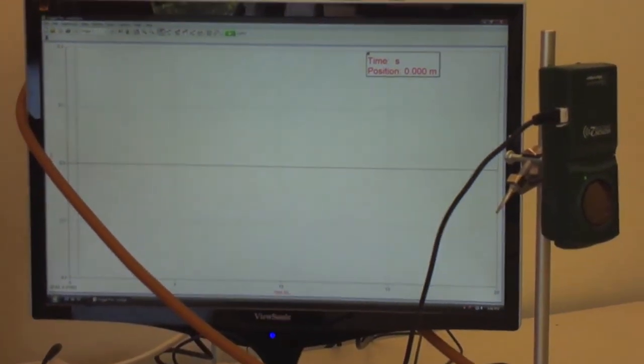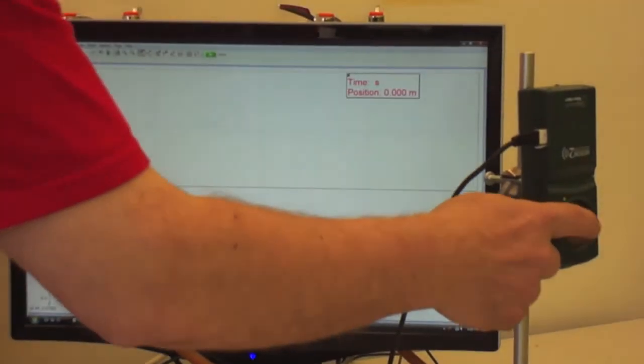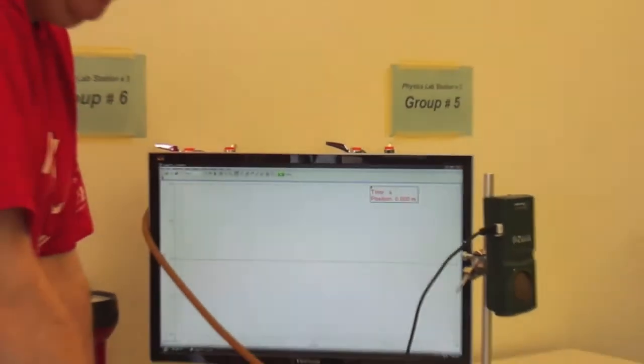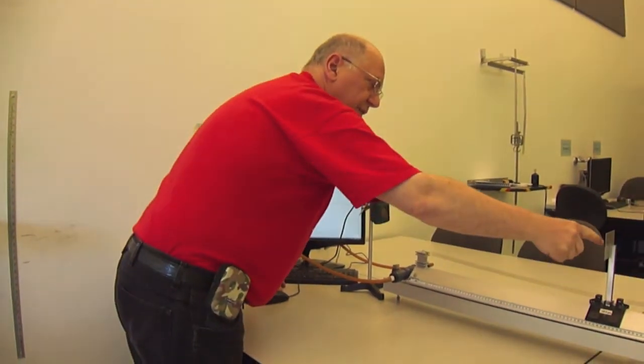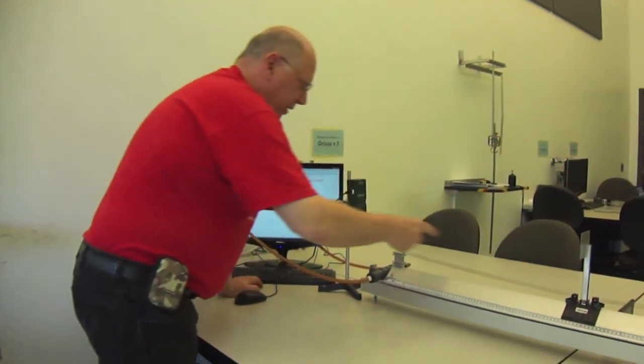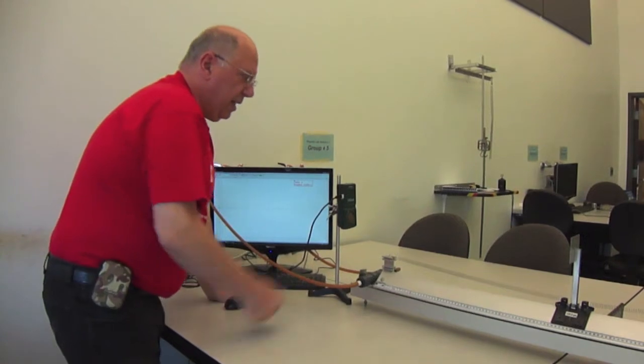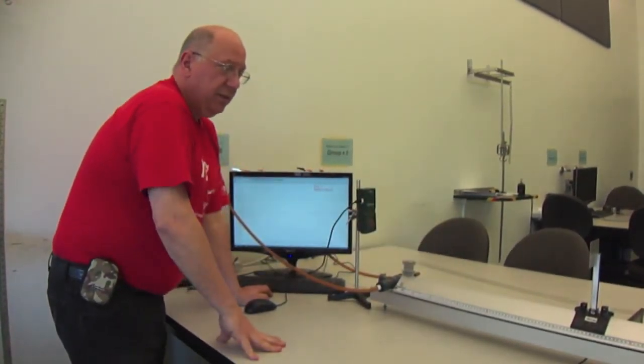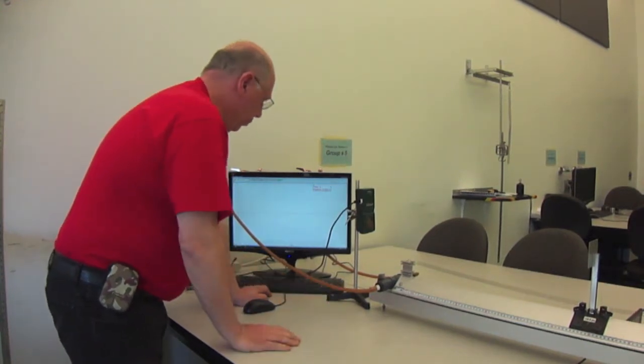Now, if you listen carefully, you hear some little audible sound pulses that are produced by the sound probe. They reflect off the metal plate here and then come back to the sound probe and now this distance between the sound probe and the metal plate on top of the glider has been set to zero. So that will be our starting point.